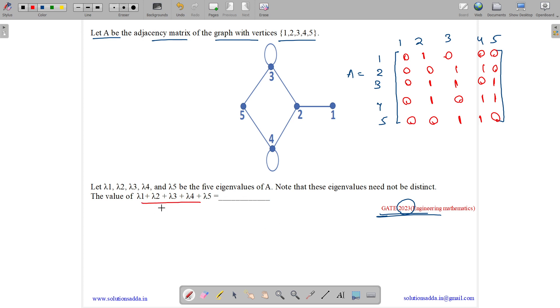So what is the sum of eigenvalues? For a matrix, the sum of eigenvalues is equal to the trace of matrix. And what is the trace? Trace is the sum of diagonal elements.